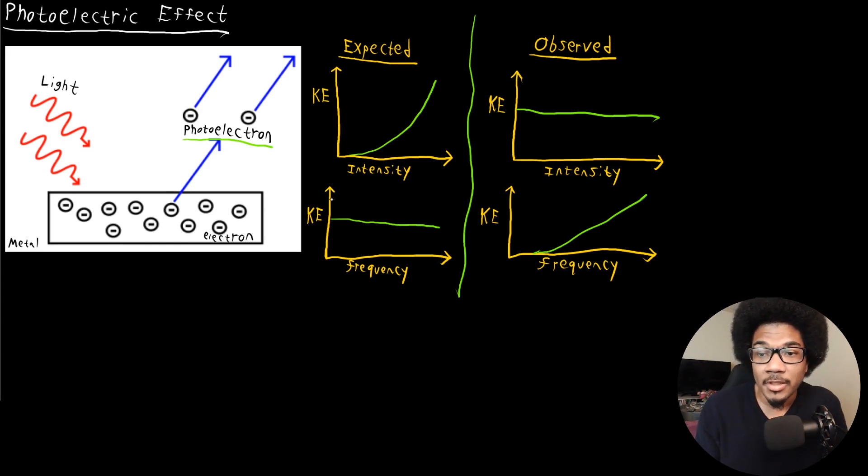And they believed that the kinetic energy, moving to this plot, the kinetic energy would have no dependence on the frequency. So whether you came in with blue light or red light, it wouldn't matter as long as the intensity was high enough to liberate the electrons. But that's not what was observed experimentally.